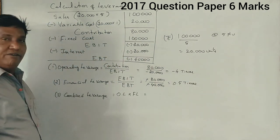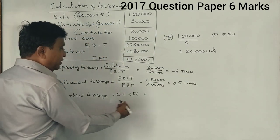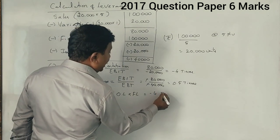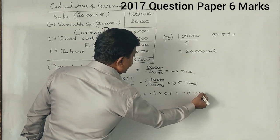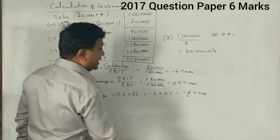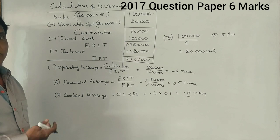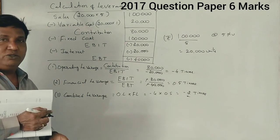If you want combined leverage also, minus 4 into 0.5 is minus 2 times. This is how we have to work on this question from 2017.